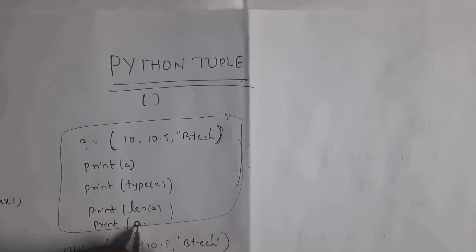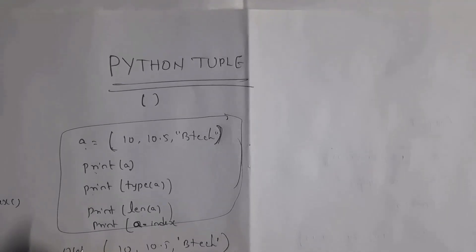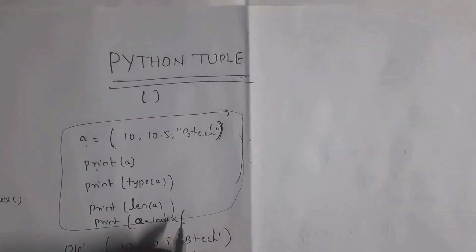By using index method you can find index number of particular item. Just write here a.index and I want to find index number of btec, so just write here 'btec' and close this print function.